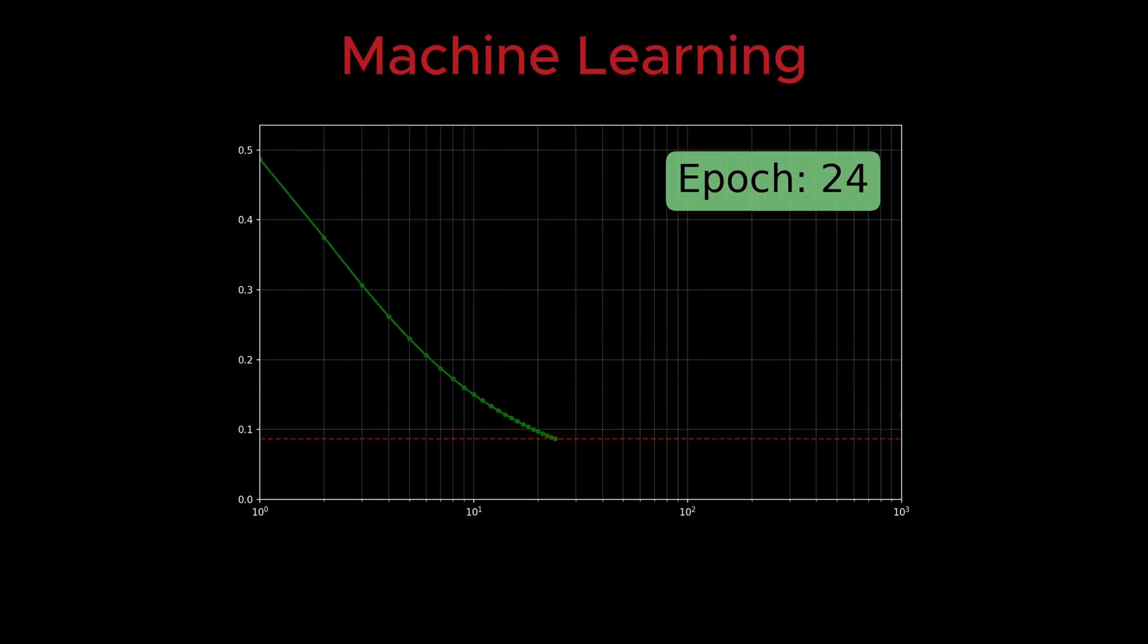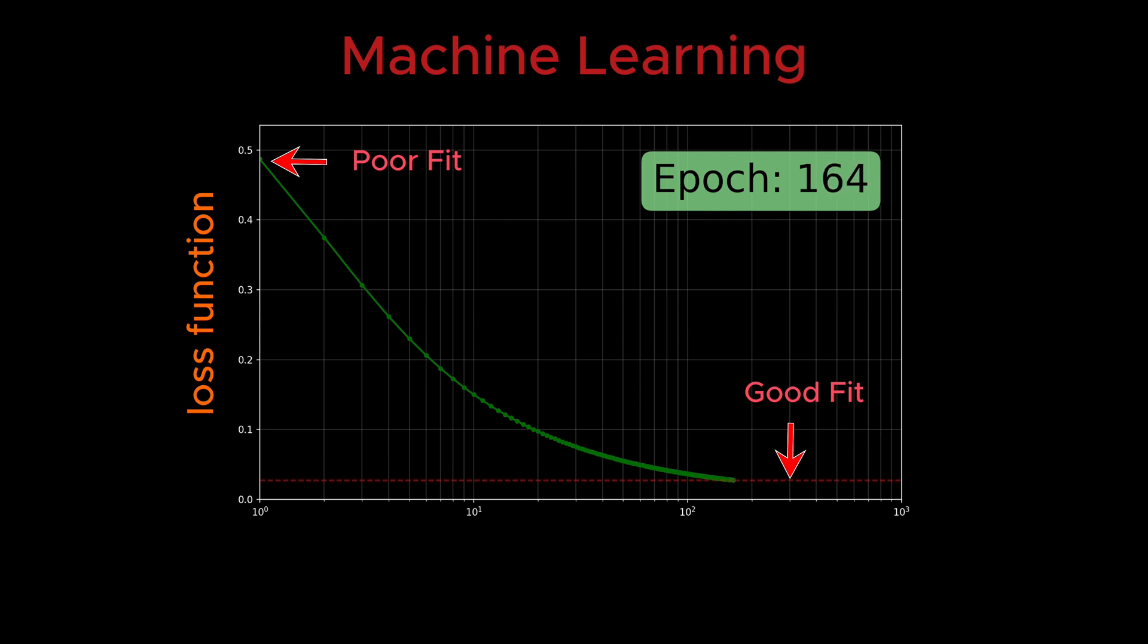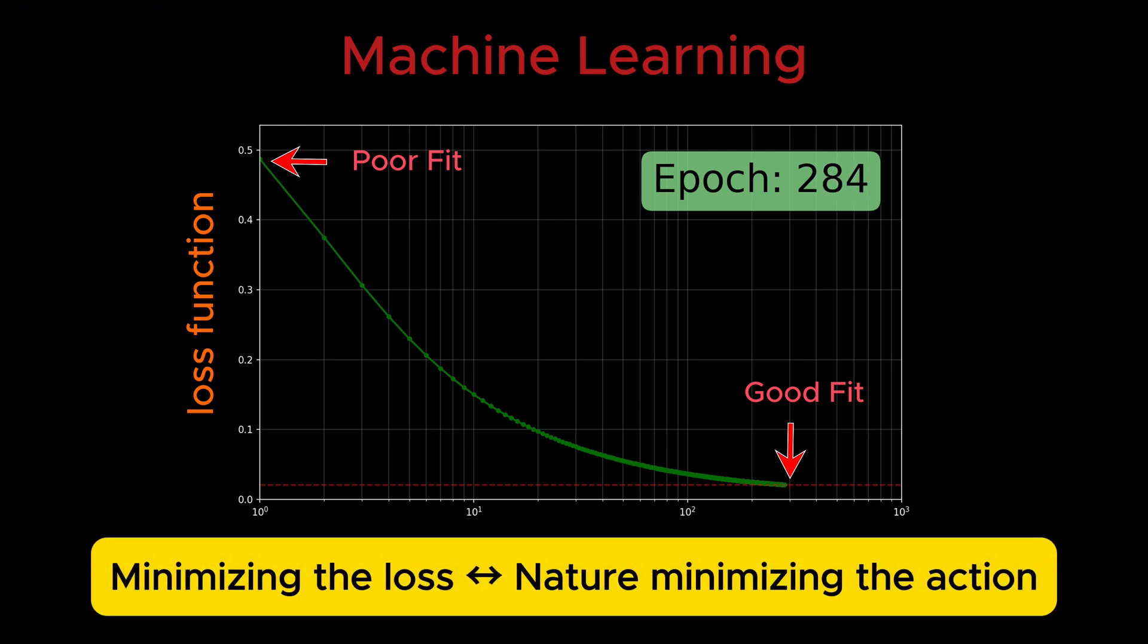Now let's switch to machine learning. In machine learning, we also have a quantity that guides behavior of models, the loss function. It measures how far the model's predictions are from the true values. The larger the loss, the worse the model. The goal of training machine learning is to minimize this loss, just as nature minimizes the action.